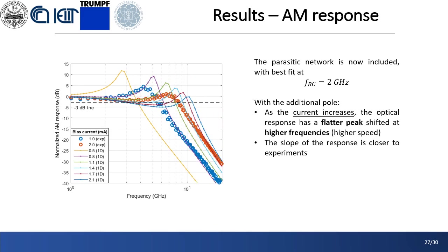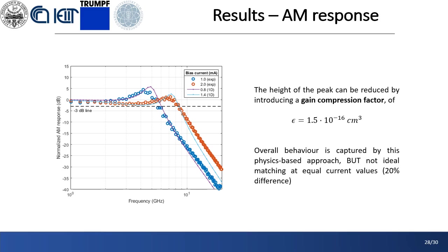On the other hand, as the parasitic RC network is taken into account by introducing a pole at 2 GHz, the ANA returns curves much closer to the experimental ones. In fact, the slope of the curves is similar to the expected 3-pole one, and the peaks are reduced as the current increases. Still, the position of such peaks is different for equal current values, and also the height is overestimated. The latter problem is partially solved by introducing in our physics-based simulator the gain compression factor that reduces the gain of the laser and therefore the height of the relaxation-oscillation peak, which now is very similar to the experimental one.